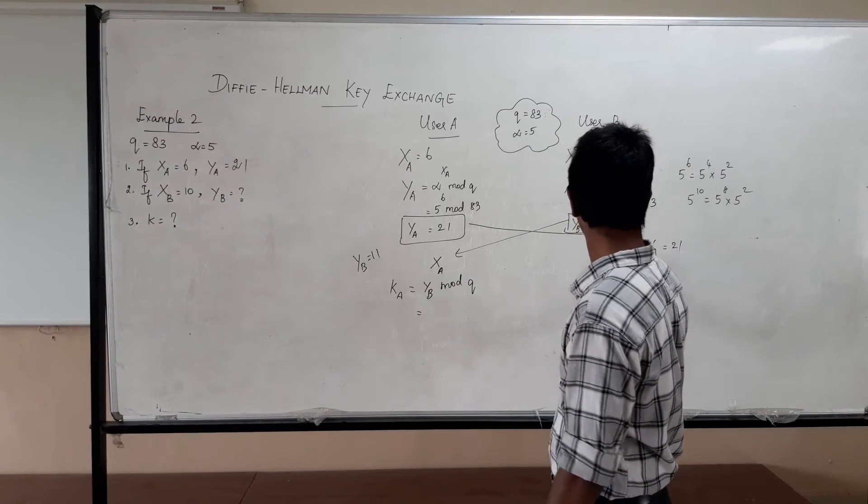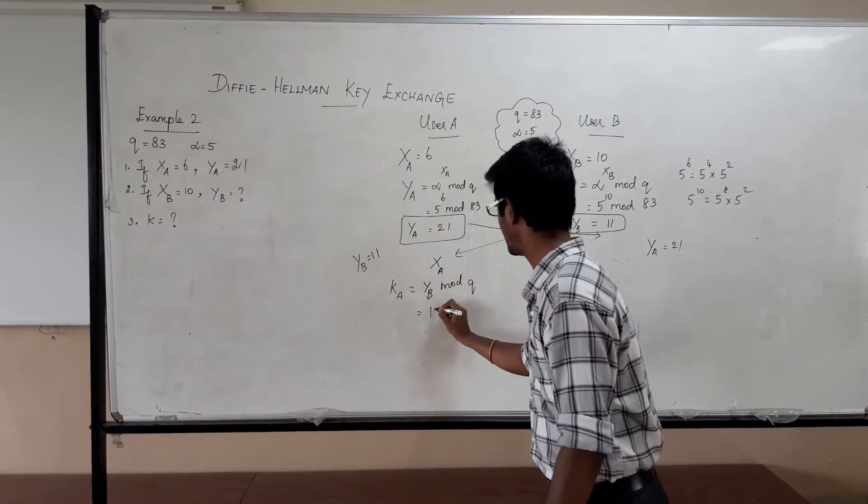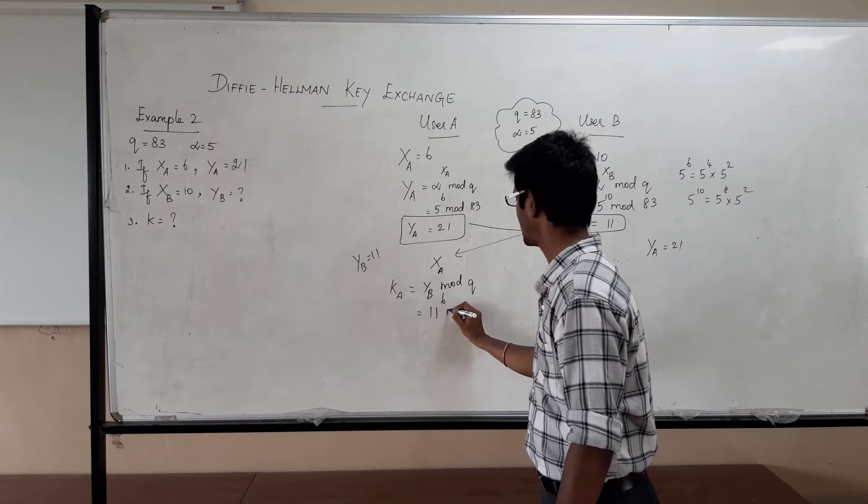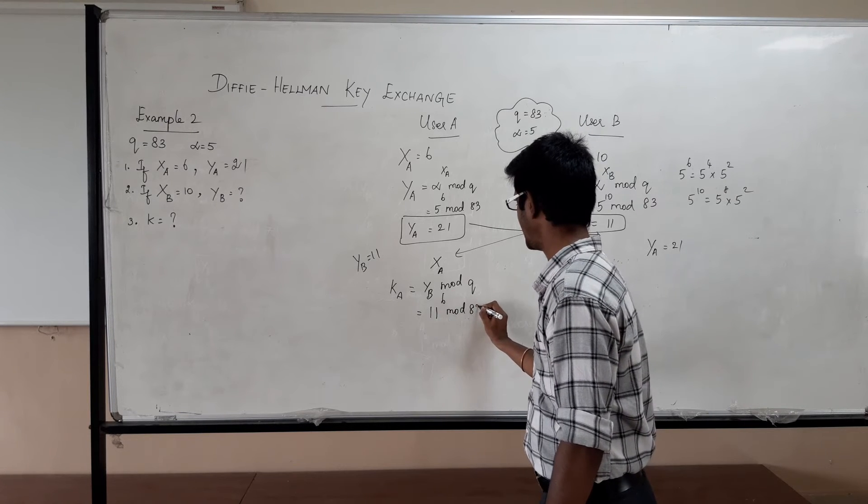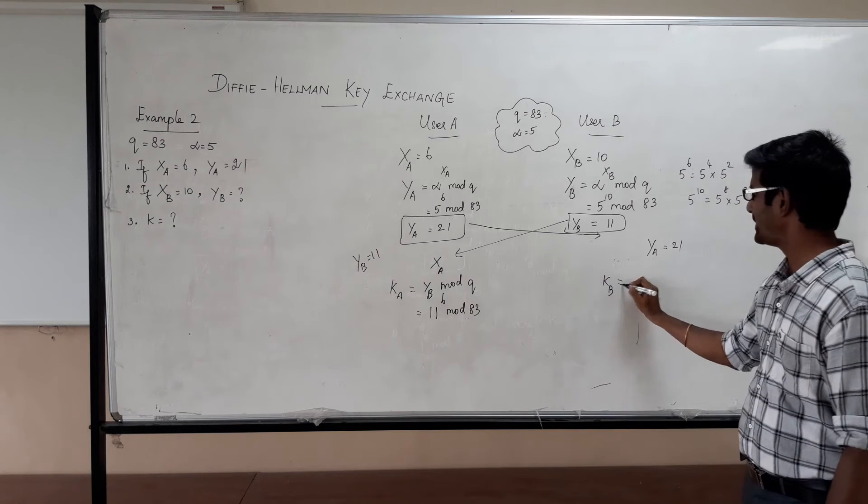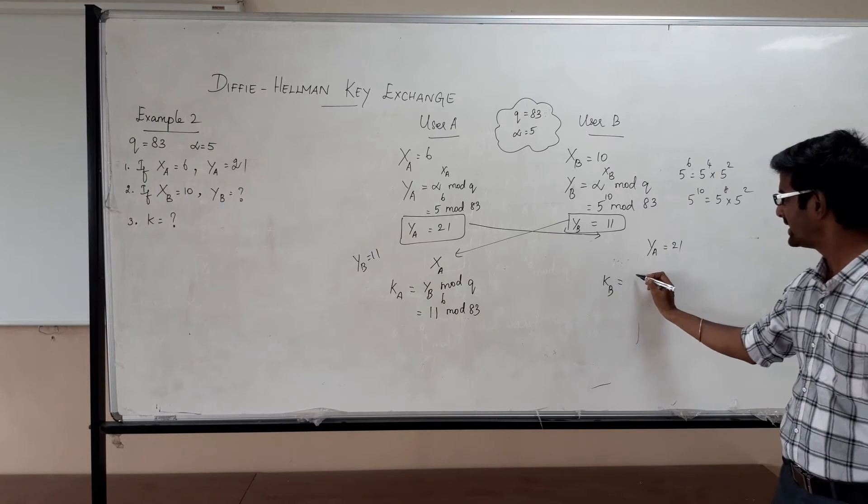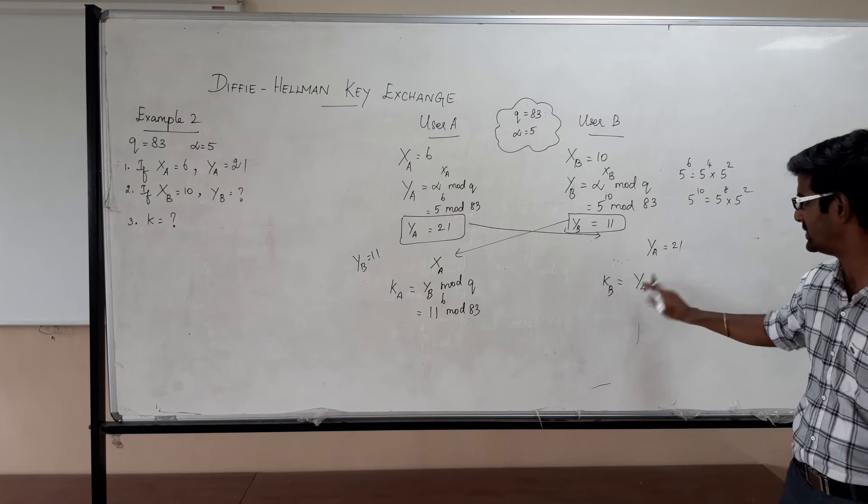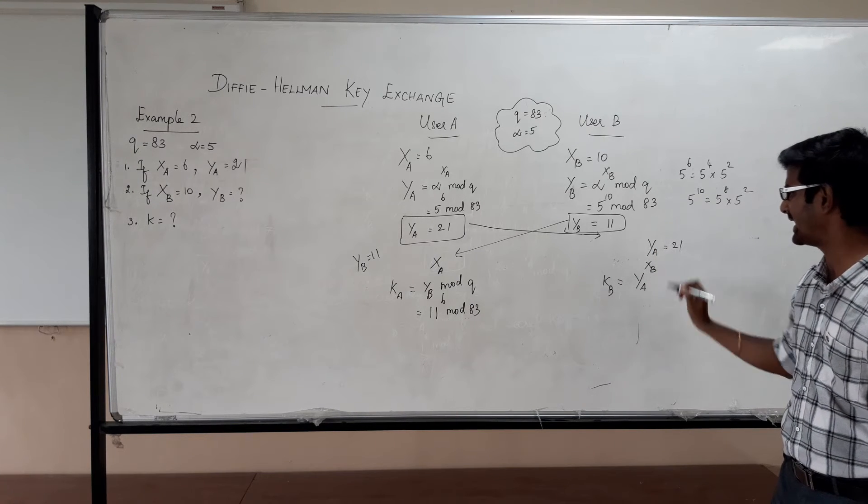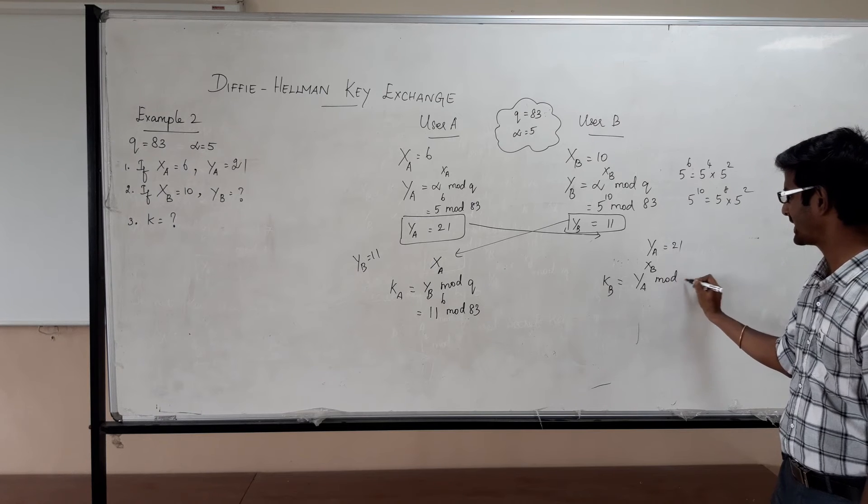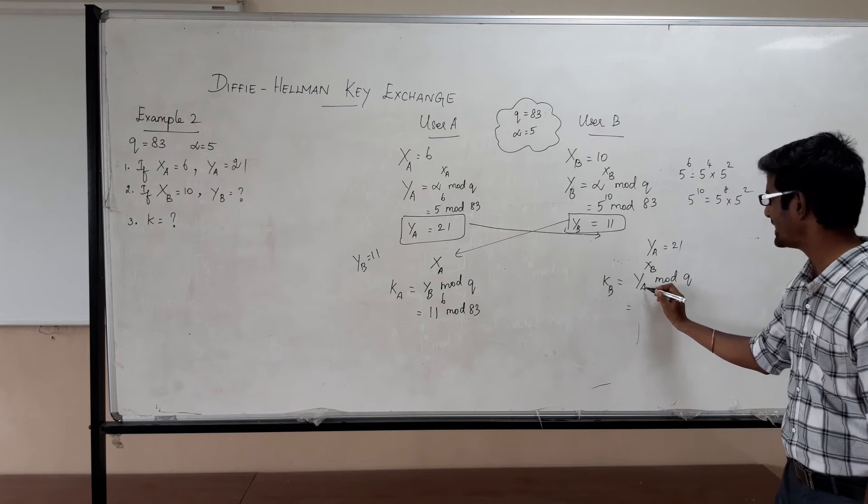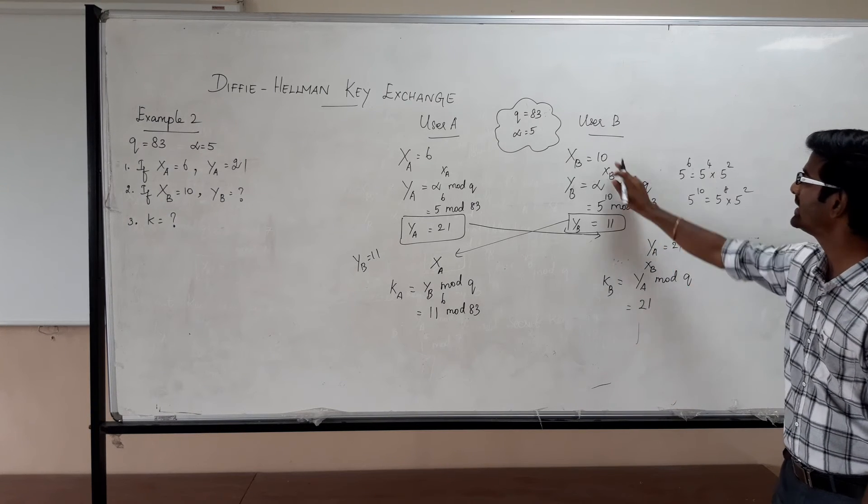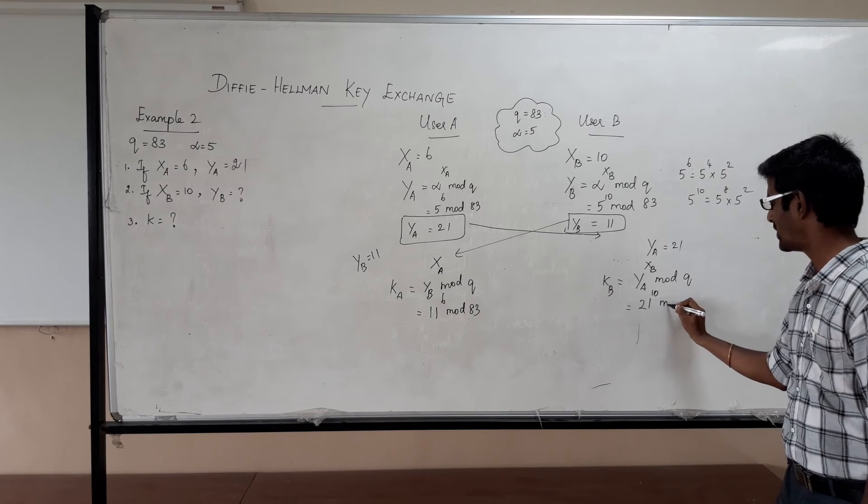What is YB? 11. 11 to the power of 6 mod 83. KB, how KB is computed? It is YA because what he is receiving from user A, that value to the power of his private key, XB mod Q. Which is equal to YA is 21 power his private key is 10 mod 83.